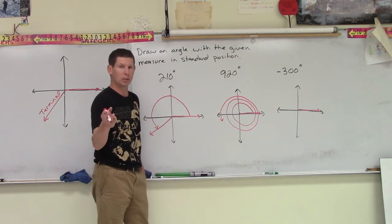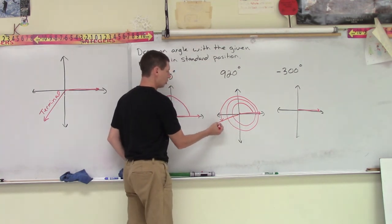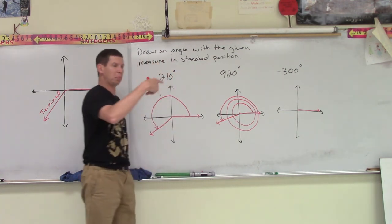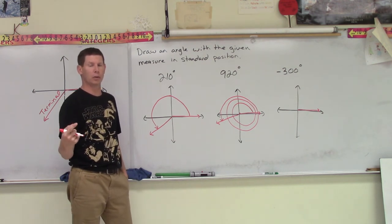And again, once you hit that finalization point, you draw your terminal side in. And that little spiral will indicate you've just spun 920 degrees.